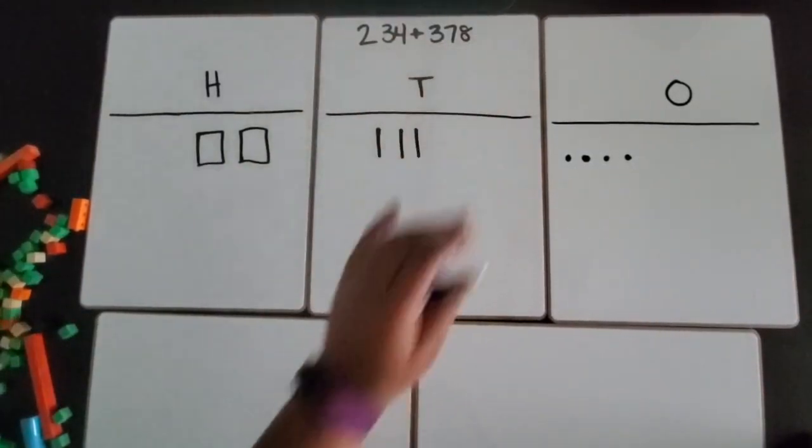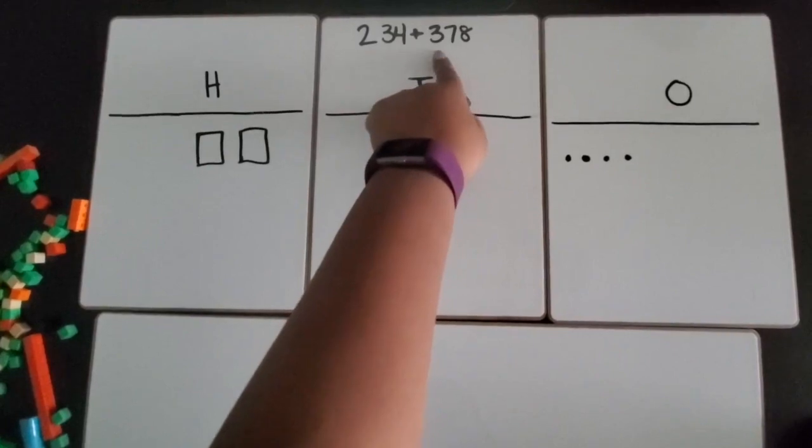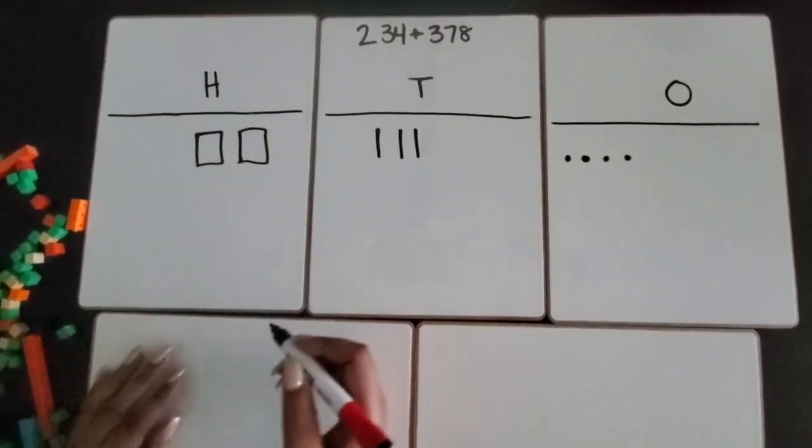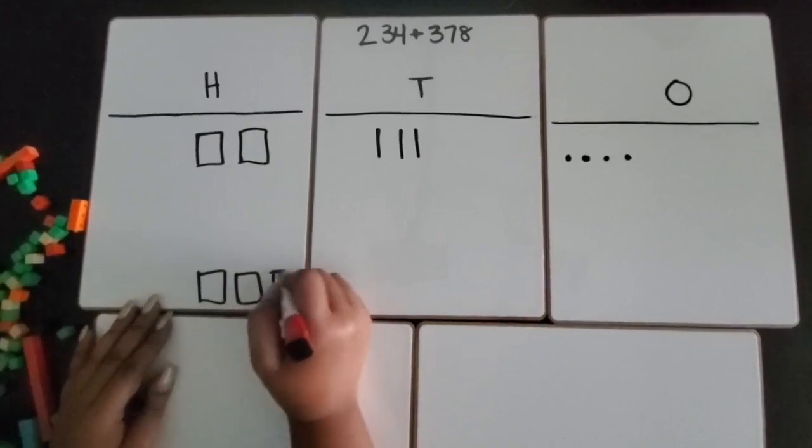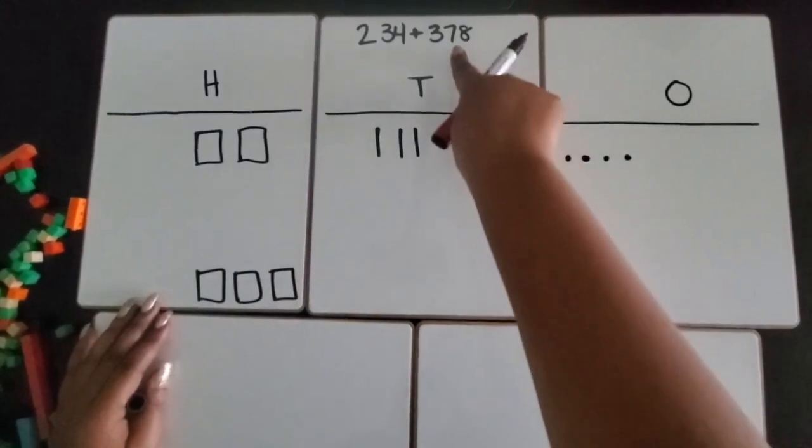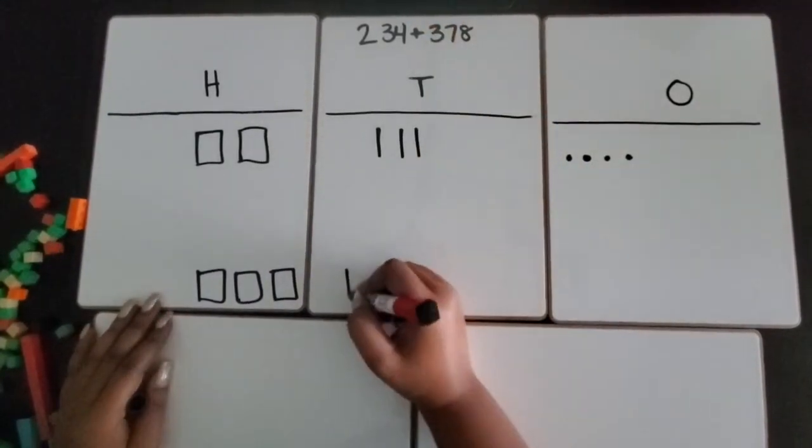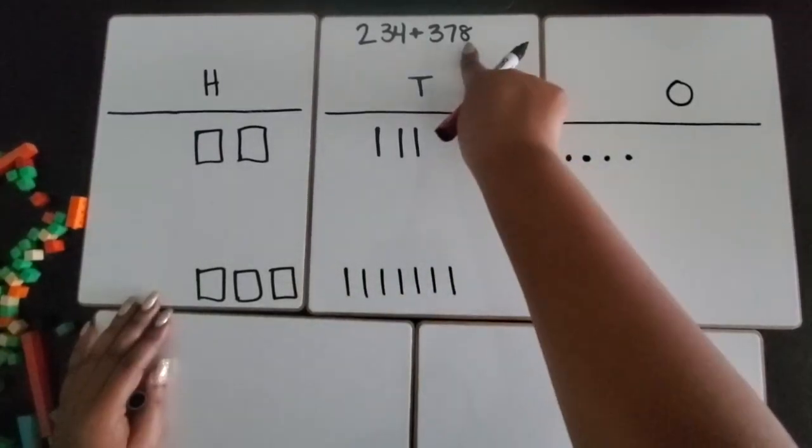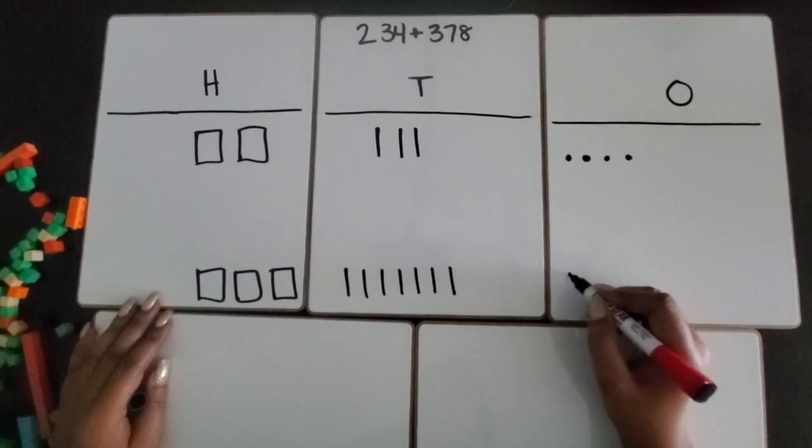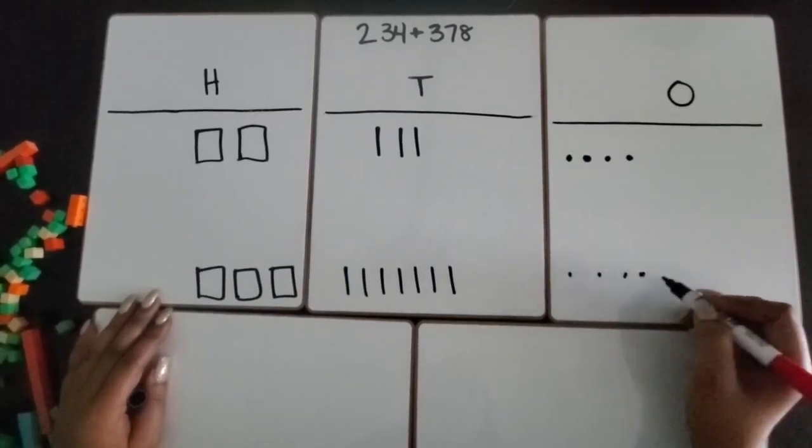Now I'm going to build the number 378. 378 has three hundreds. I'm going to do that down here. 378 has seven tens: one, two, three, four, five, six, seven. And 378 has eight ones: one, two, three, four, five, six, seven, eight.